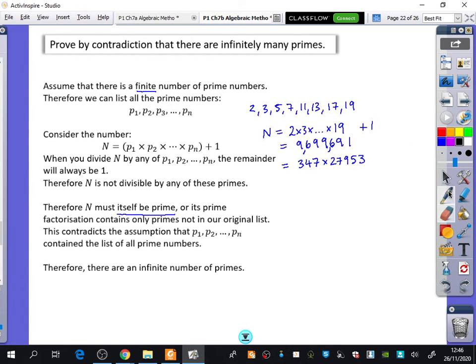So actually, it's not a prime number, this N plus 1, but it has two numbers in its prime factorization that are not in the list. Either way, we've come up with prime numbers that aren't in the list, which contradicts our assumption.